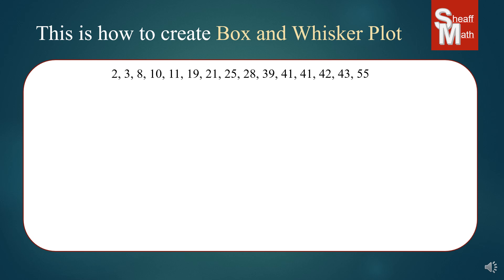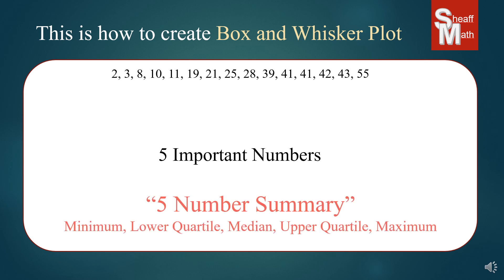We start with a set of data, a bunch of numbers. And hopefully you have them in order. If not, you're going to have to put them in order. Next, we're going to find five important numbers and we call this set the five number summary, and it consists of five special numbers.